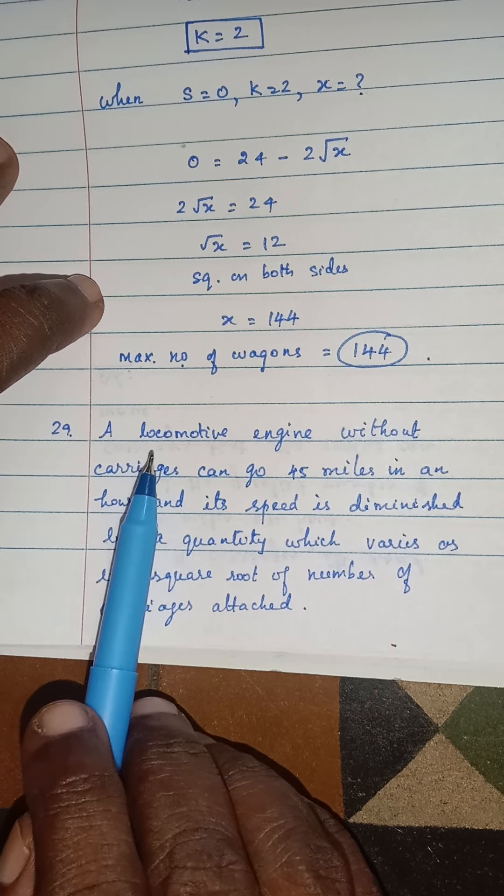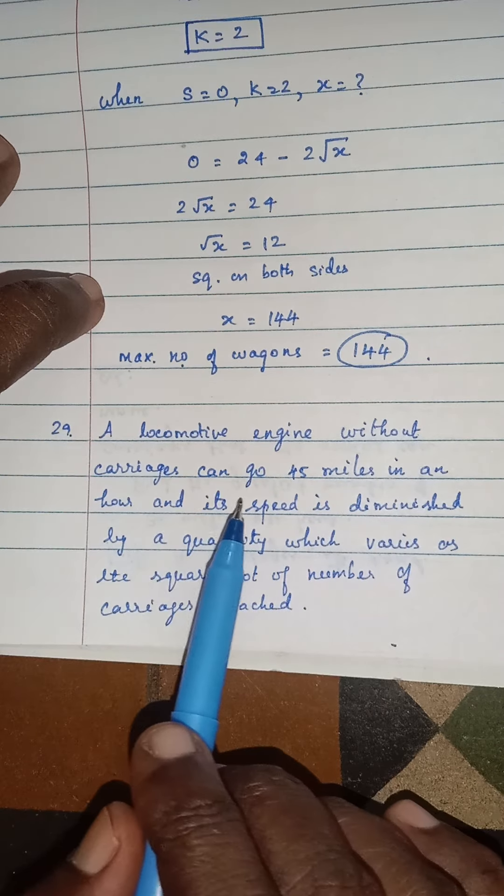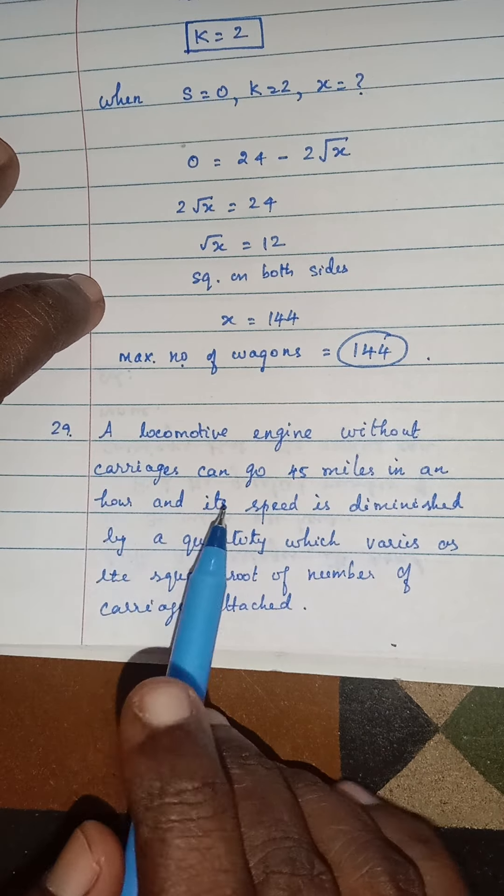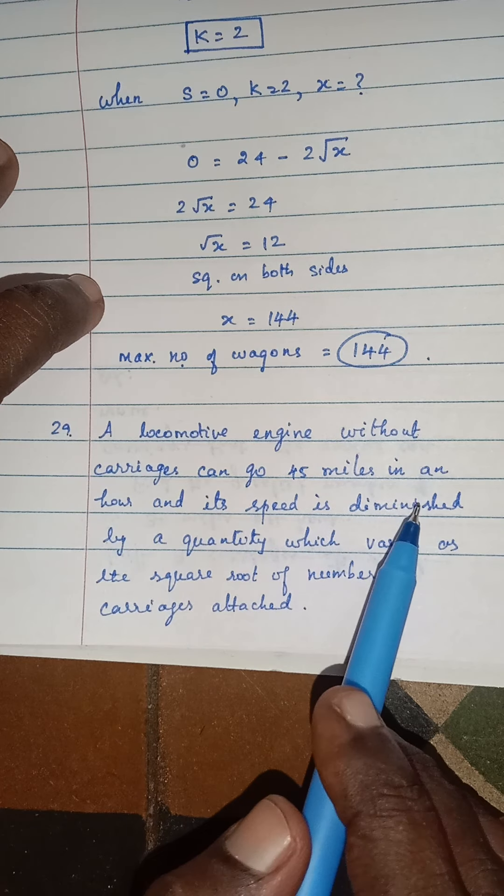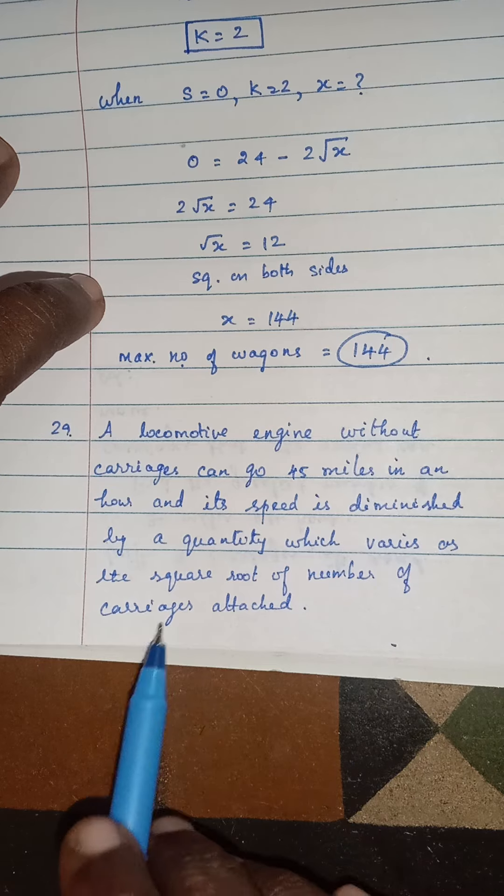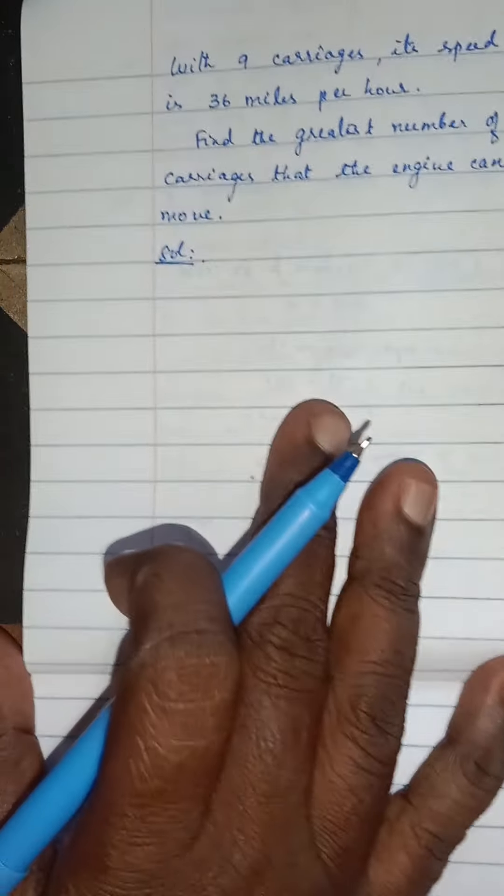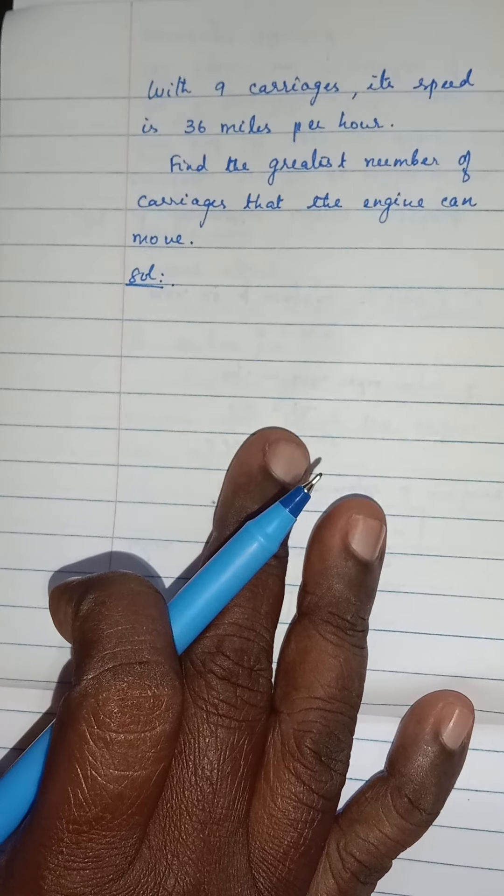A locomotive engine without carriages can go 45 miles in an hour and its speed is diminished by a quantity which varies as the square root of number of carriages attached. With 9 carriages, its speed is 36 miles per hour.